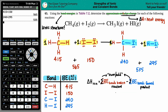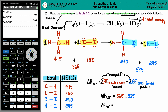Delta H approximate for the whole reaction equals bonds broken minus bonds formed: 565 minus 535 equals 30. The units from the bond energy table are kilojoules per mole, so approximately 30 kJ/mol is absorbed. That positive number means the reaction is endothermic — you're absorbing heat energy. The exact value might be around 35, but 30 is the approximate answer.